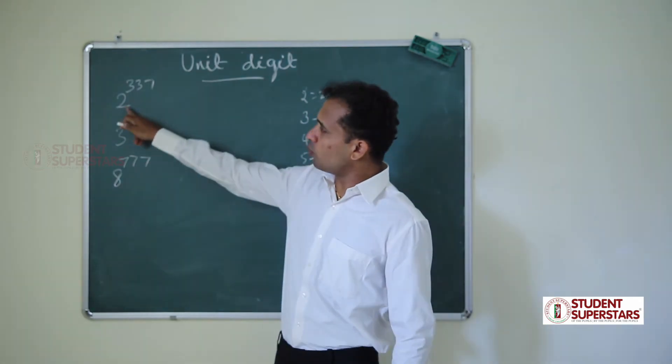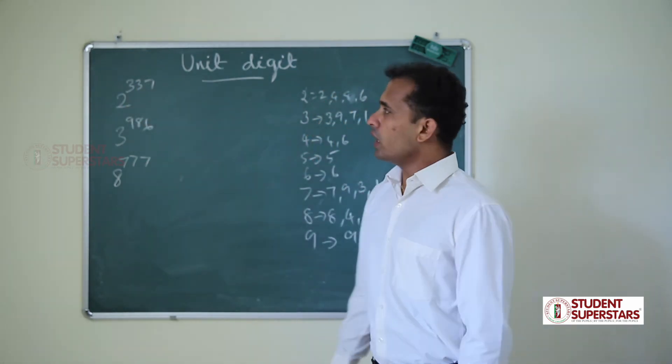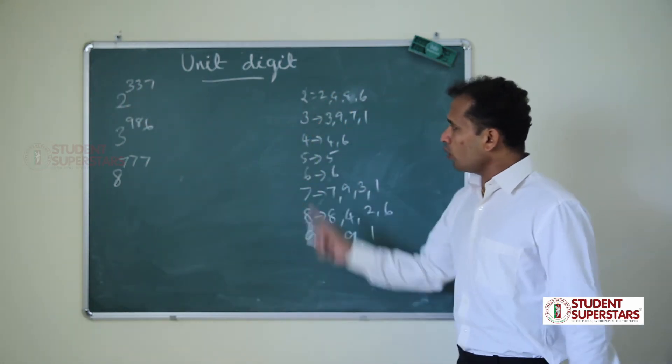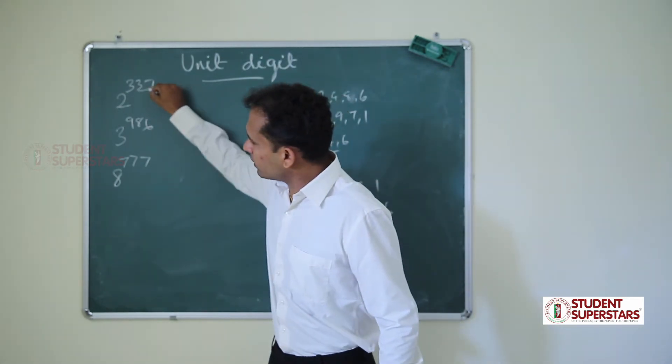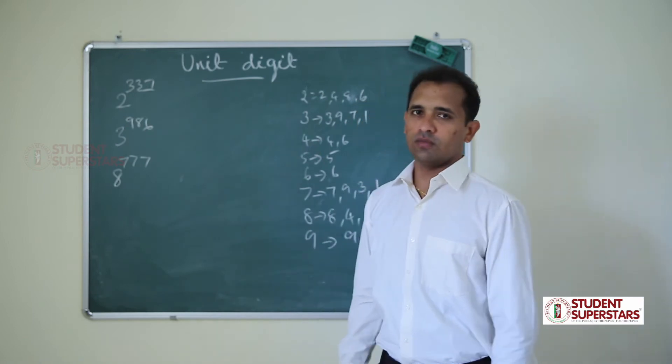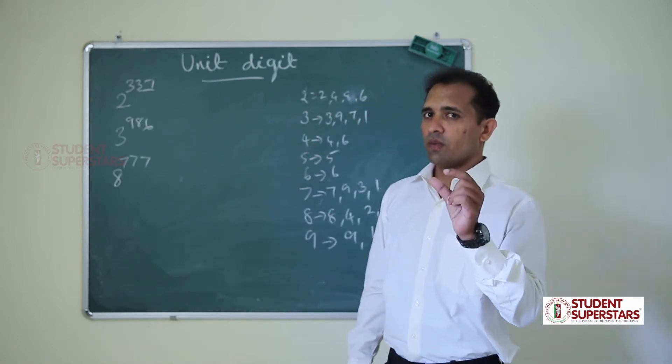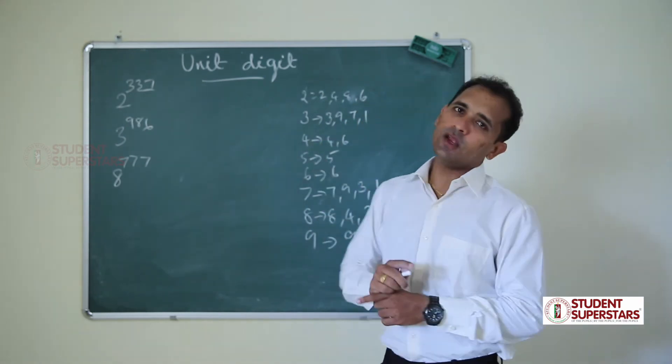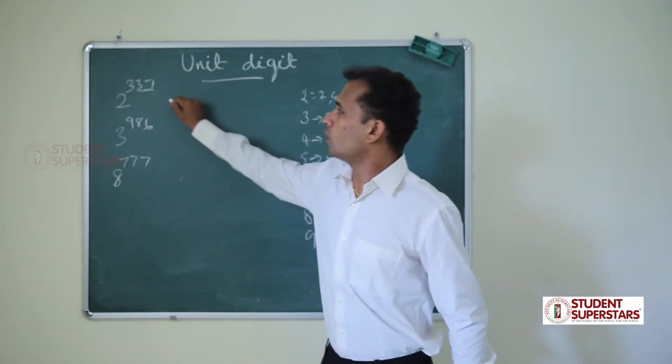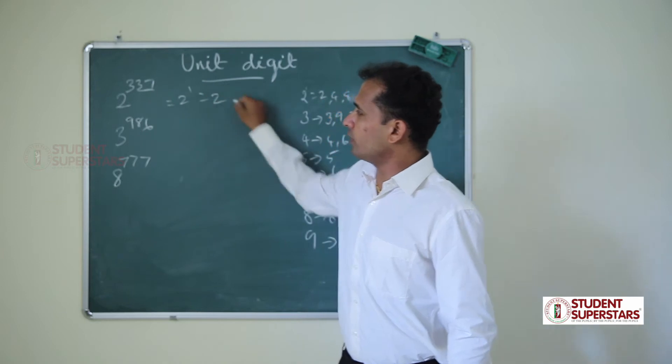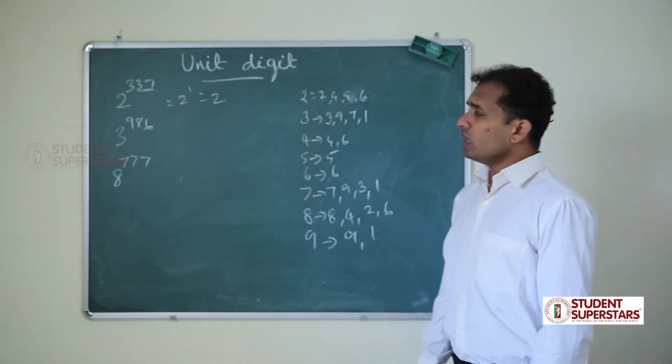Here for example, 2 power 337. 2 has a power cycle of 4. We have to divide the last 2 digits by 4, so that we will get the remainder. Based on the remainder, we can find the unit digit. So 37 by 4 remainder is 1, so 2 power 1 is 2.